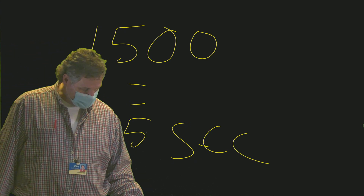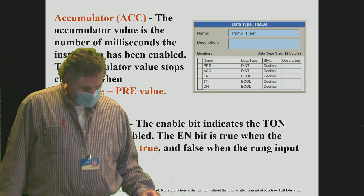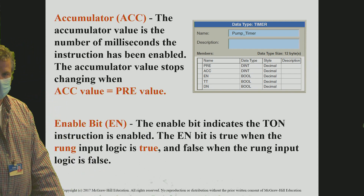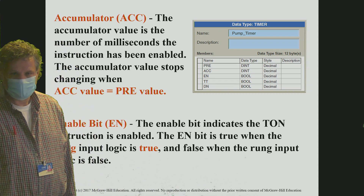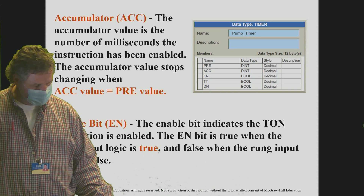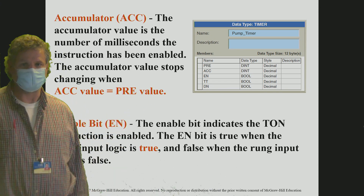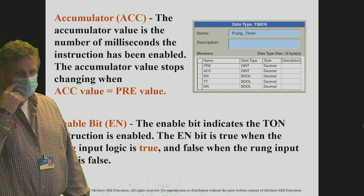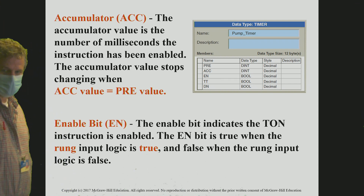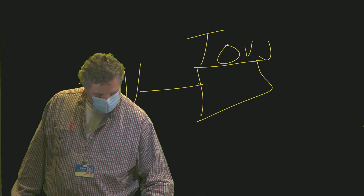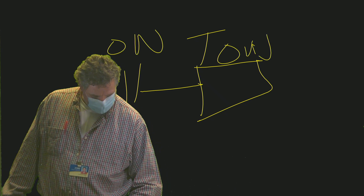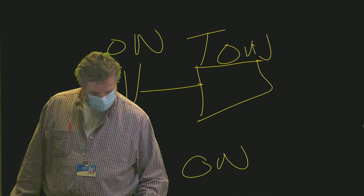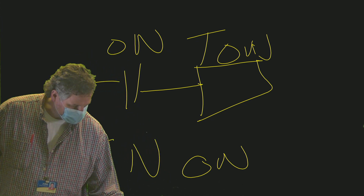The accumulator is a 32-bit word so we can get a very large value in there. The accumulator value stops changing when the ACC value equals the preset value. The enable bit turns on every time that the timer is enabled — every time the input to the timer is on, the EN is on. If the timer input is active all the way through, the enable will be on.